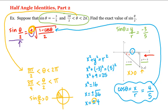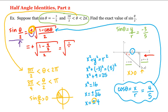So this is equal to — choosing the positive — the square root of one minus cosine theta, where cosine theta is four-fifths, all divided by two. That gives us the square root of one minus four-fifths, which is one-fifth, divided by two, which is the square root of one over ten. Rationalizing, we get square root of ten over ten, which is our answer.